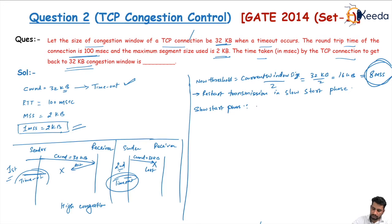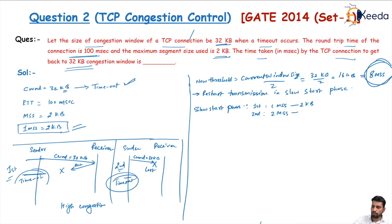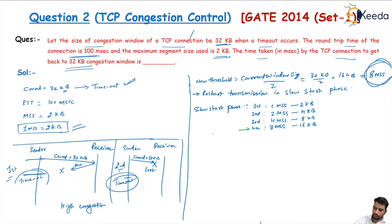In the slow start phase, transmission 1 sends 1 MSS = 2 KB. Transmission 2 sends 2 MSS = 4 KB. Transmission 3 sends 4 MSS = 8 KB. Transmission 4 sends 8 MSS = 16 KB, which reaches the threshold. At the threshold, the slow start phase stops and the congestion avoidance phase starts.